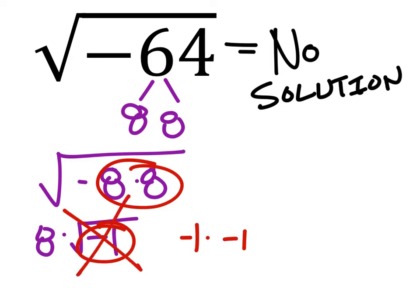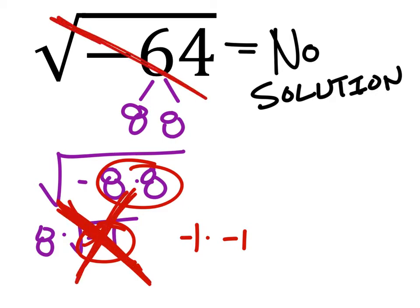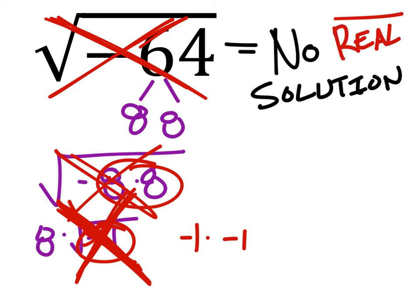So this can't happen. The square root of a negative cannot happen. It can't happen here, it can't happen there, it can't happen anywhere. Until you guys get into a different grade. So for now, no solution, or technically we would say no real solution. And that makes everyone feel good.